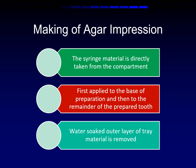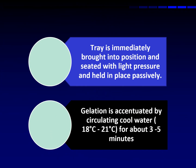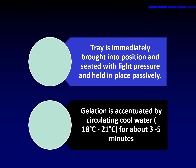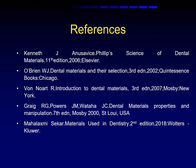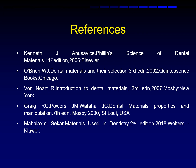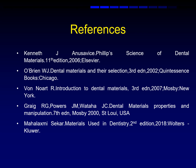Once the material reaches the gel stage, we have to remove the tray in a single jar. Then we have to wash it under running tap water. Then we have to disinfect the material in povidone iodine or iodine form or glutaraldehyde material. For further details, you can refer to the following textbook. Thank you.